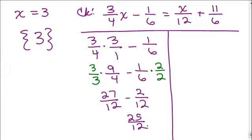All right. Now we're going to plug in 3 for x on the other side of the equation. So we have 3 twelfths plus 11 sixths.